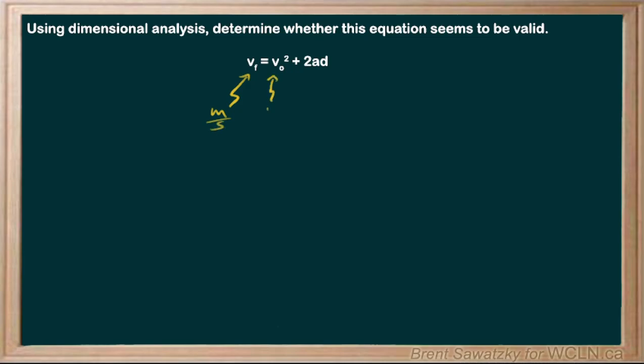And the original velocity, that would also be meters per second. And we have an acceleration, that would be meters per second squared. And a displacement, which is meters. And the two in there, of course, no units associated with that. It's just a constant.